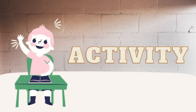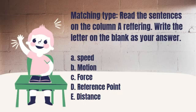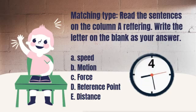Let us have an activity — matching type. Read the sentences in column A and write the letter on the blank as your answer. Here are the choices: A for speed, B for motion, C for reference point, and E for distance. I will give you 10 seconds to copy this.